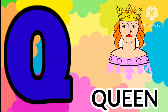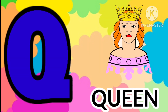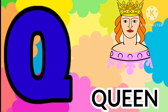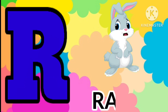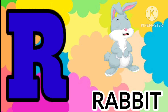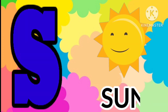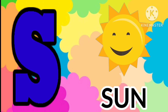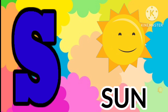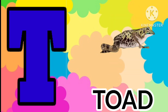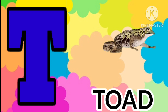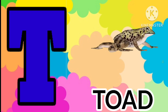Q is for queen, qu-qu-queen. R is for rabbit, r-r-rabbit. S is for sun, s-s-sun. T is for toad, t-t-toad.